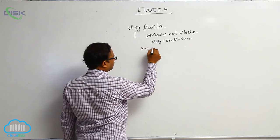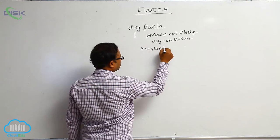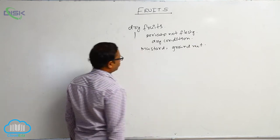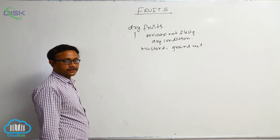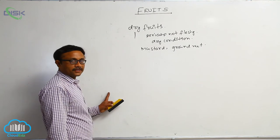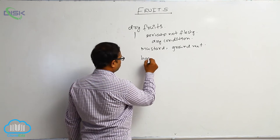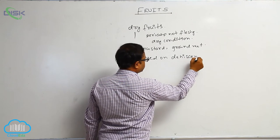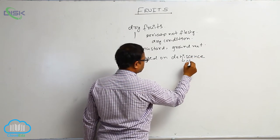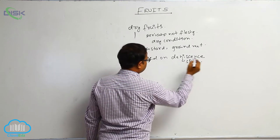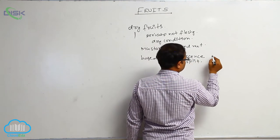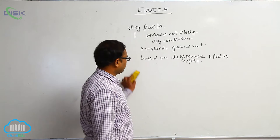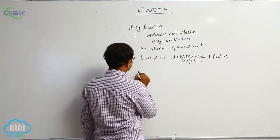Dry fruits — for example, you take mustard and groundnut. These are some dry fruits. At the time of mature condition, based on dehiscence of that dry fruit — dehiscence means split — dry fruits are mainly of three types.